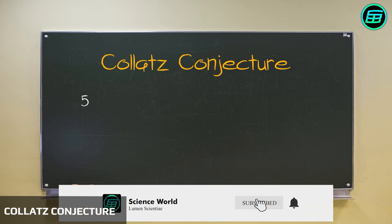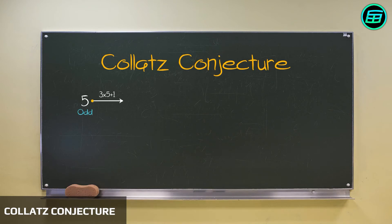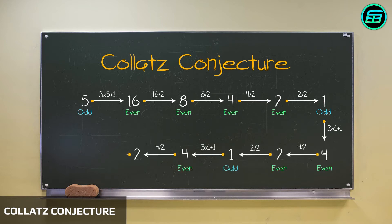Say we pick the number 5 — it's odd. Therefore, we multiply by 3 and add 1, which gives us 16. 16 is even, so we divide it by 2 to get 8. Dividing by 2 again gives 4. Dividing by 2 again gives 2. And finally, dividing this by 2, we end up with 1. 1 is odd, so now we multiply by 3 and add 1, which gives 4. So we find ourselves in an infinite loop, just repeating 4, 2, 1.